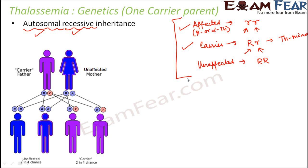In Case 1, where only one parent is a carrier, there are chances the child might be a carrier but no chance of severe forms of thalassemia. For example, if the father is a carrier (capital R, small r) and the mother is unaffected (capital R, capital R), two children would be completely normal, and the other two would carry one defective gene but not be affected — they might suffer from thalassemia minor but will not develop alpha or beta thalassemia.